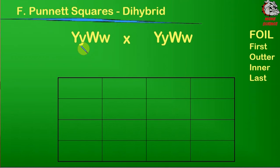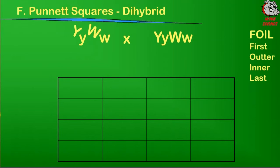I'm going to animate what I mean by those. When we talk about the first, we're talking about the first genes here — the first two genes in each of these. We've got Y's and W's, so the first two genes are capital Y and capital W, which we put across the top column. Remember, each parent can only give one of these genes to its offspring, but there are several combinations: big Y big W, big Y little w, little y big W, or little y little w. The outer two genes are capital Y and little w, and those go across the top of the second column.